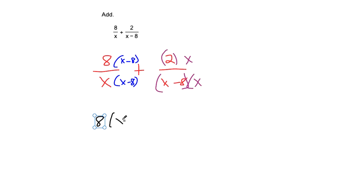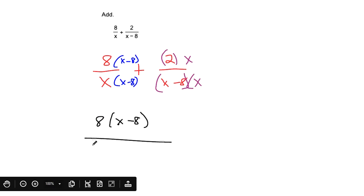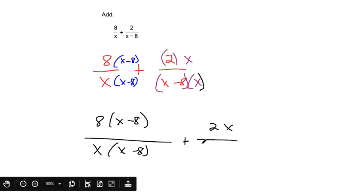So the first fraction now has an x minus 8 multiplying at the top. We made it bigger but it's actually steering us in the right direction because now at least the denominators are in common. You could write this as x minus 8 times x.